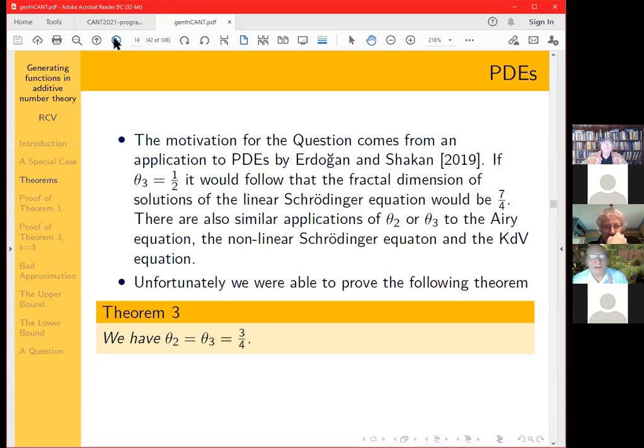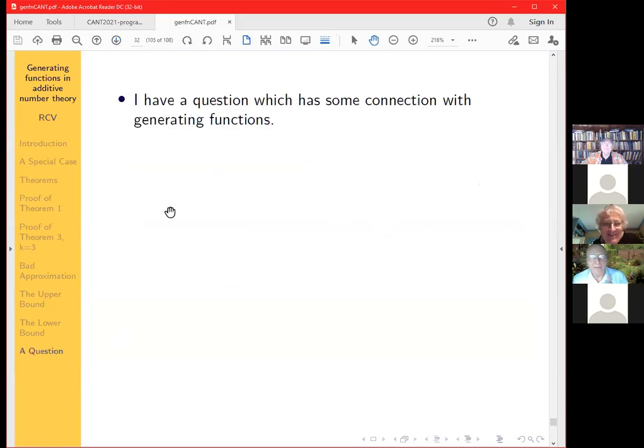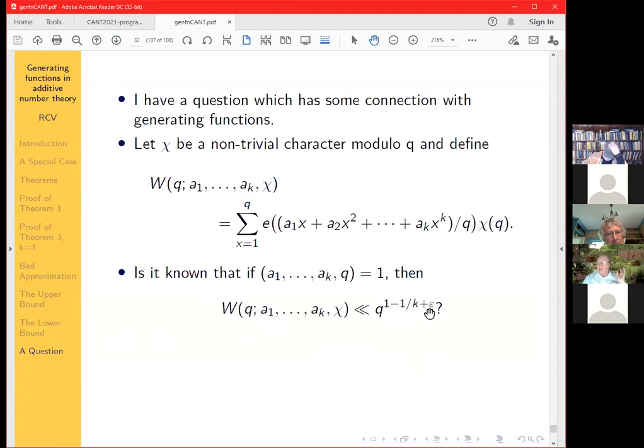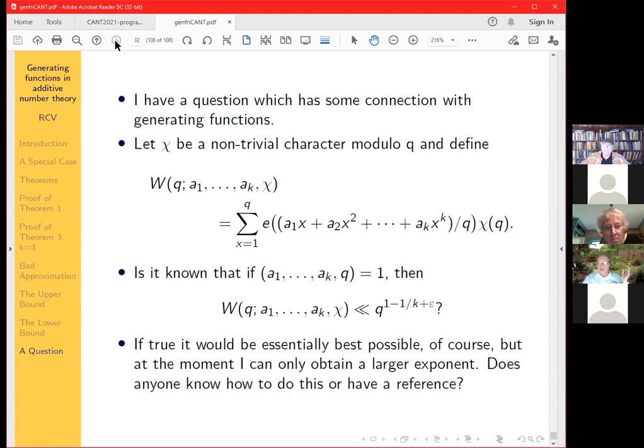But there was one other thing—I want to end with a question and maybe Trevor knows the answer to this. So it has some connection with generating functions, this time generating functions for primes really. Okay. Look at this complete exponential sum similar to the one we had before, but now twist it by a character χ, non-trivial character modulo q. Okay. What's the best bound you know for this? Is it really true that this is bounded by q^(1-1/k+ε)? I don't know how to prove it in general. I know how to prove it if q is prime and I know how to prove it if χ is the principal character. But if q is p² or p^t, I do not know how to prove it. I know how to get some exponent less than one here. So I'm going to finish with this question—see if anybody knows the answer or has a reference. Thank you very much.